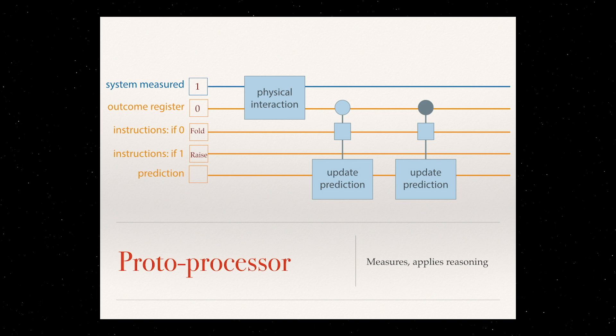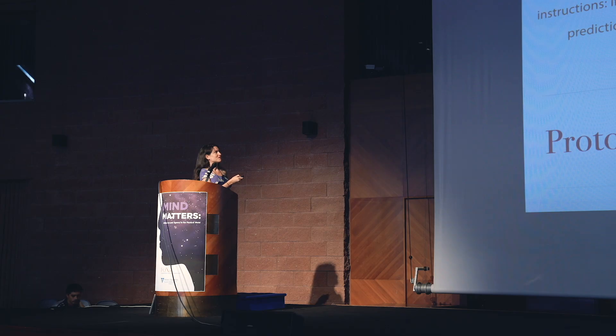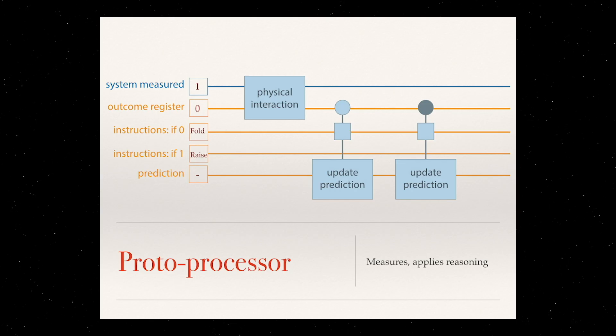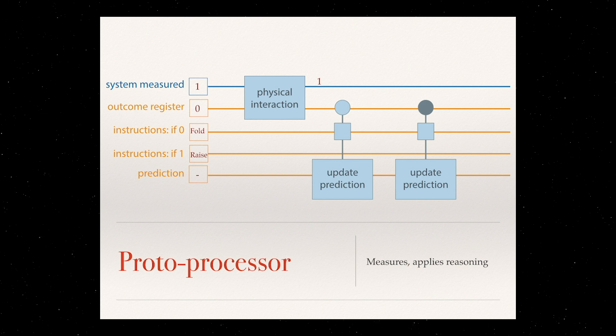You have this physical interaction, very simple, after which we should have here in the register that it's a one. Then it checks if it's a zero. If it was, it would check what this instruction says. But because it's not, it just moves on. There's nothing changing in the prediction. Then it goes and checks if it's a one. Again, this square should be here. And it does whatever it says here. So it will raise.